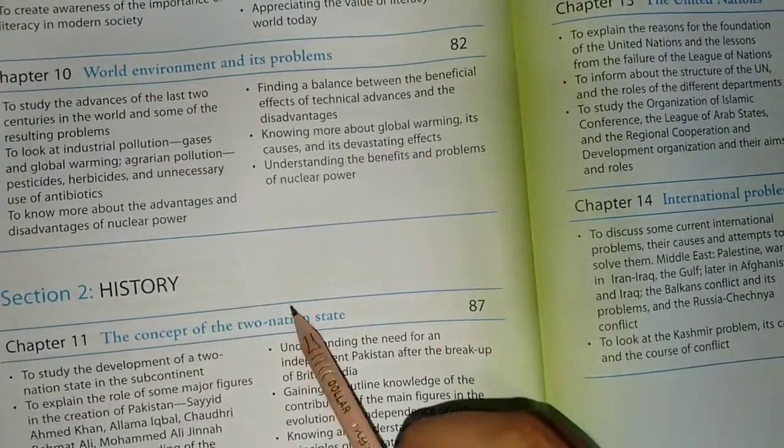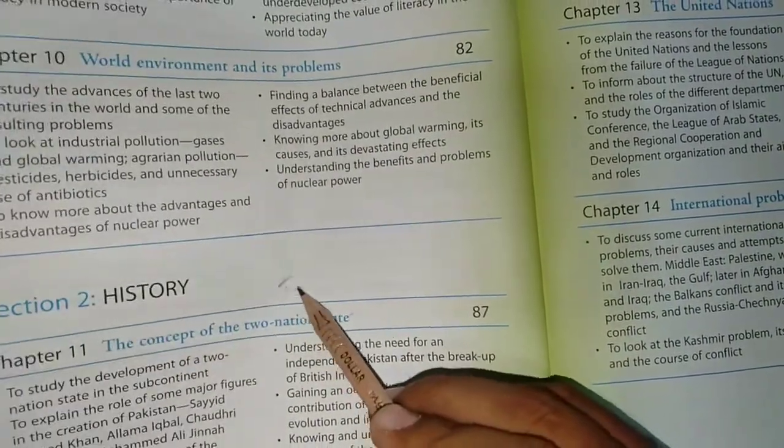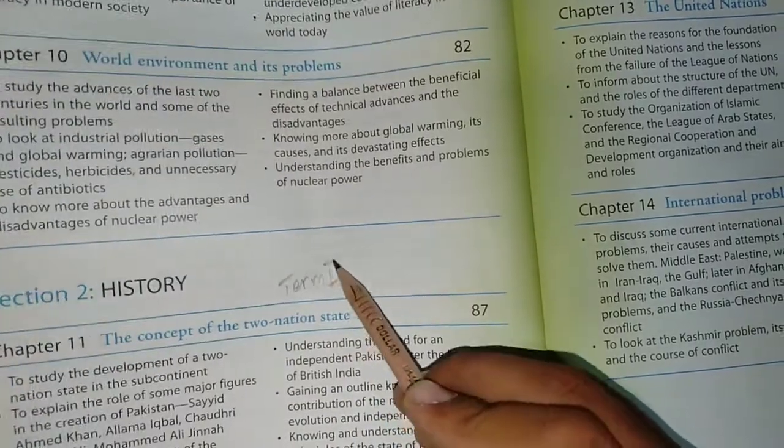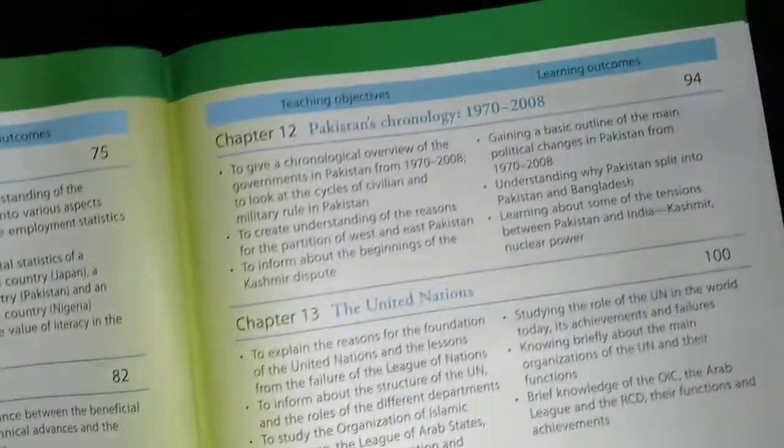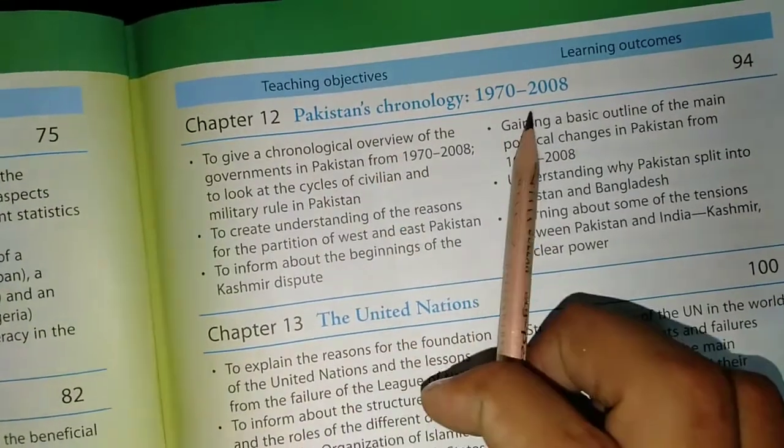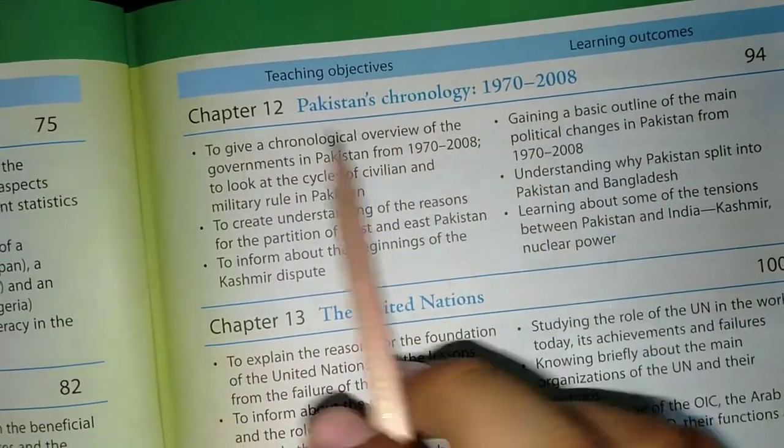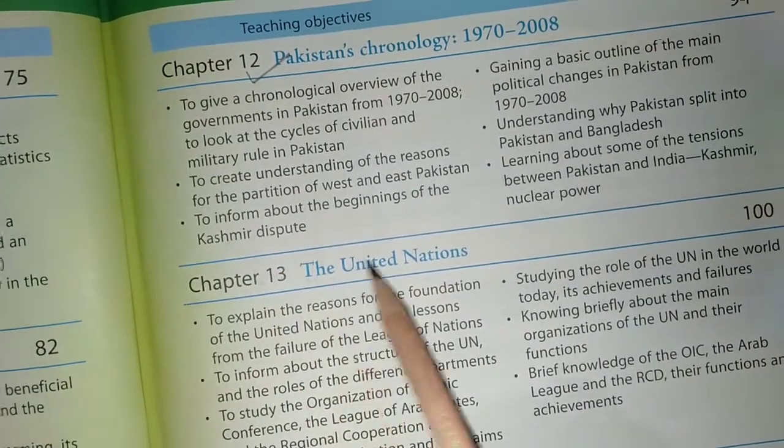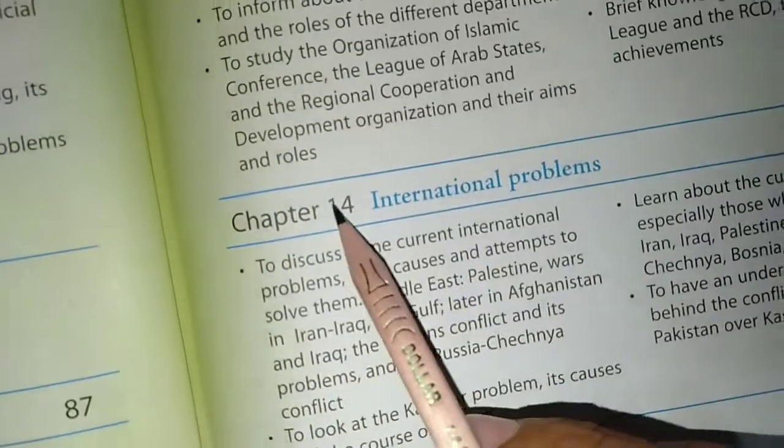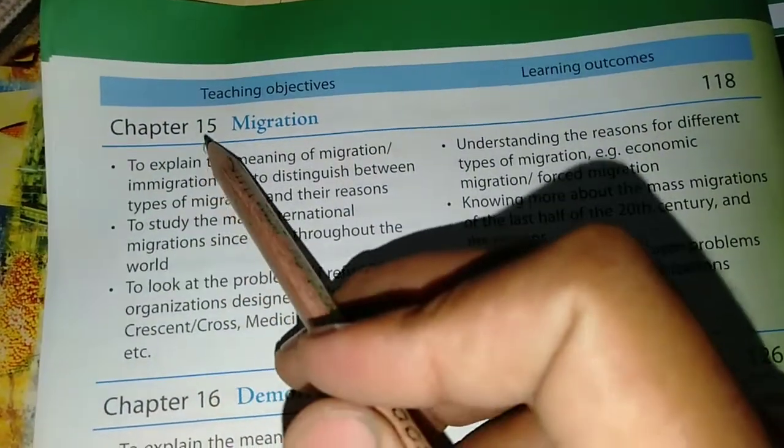Let's move on to the history portion. The first chapter for term 1 is chapter 11, the concept of the two nation state. Second is Pakistan's chronology 1972-2008, third is chapter 13 the United Nations, 14 is international problems, and 16 will be migration. These are five chapters for term 1.